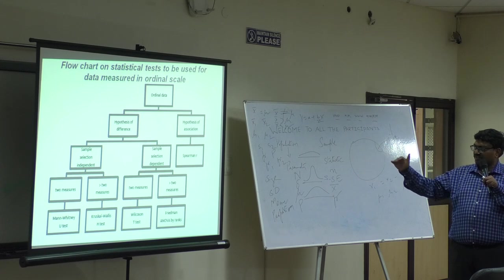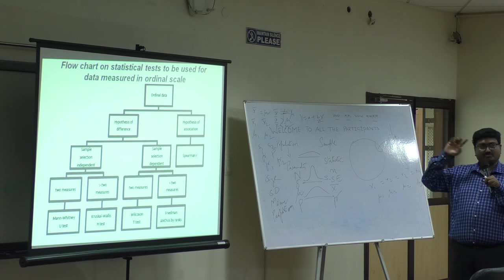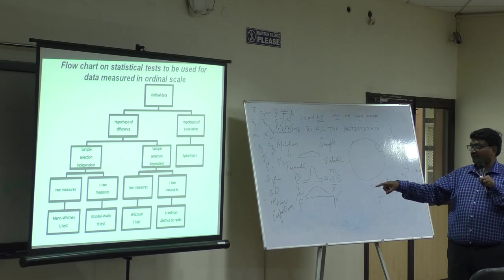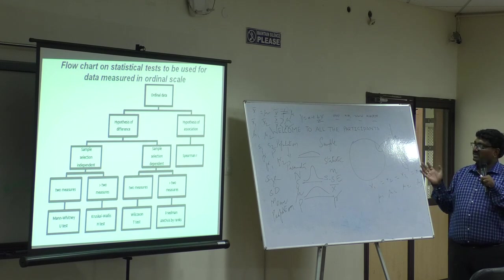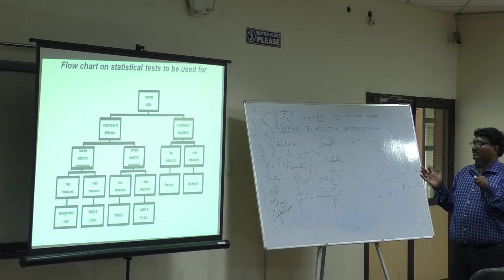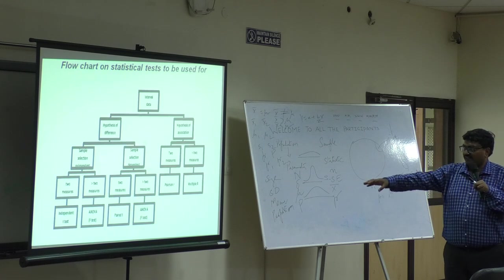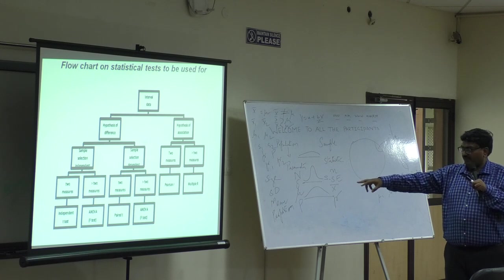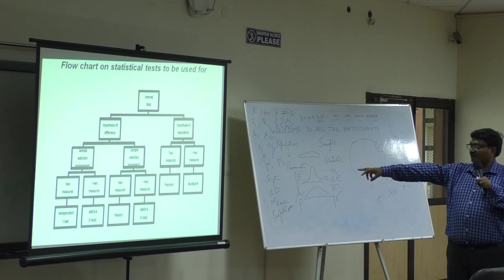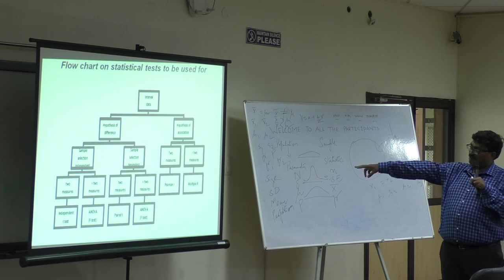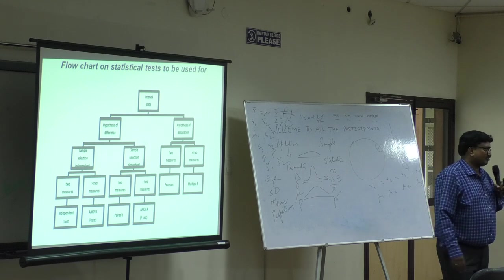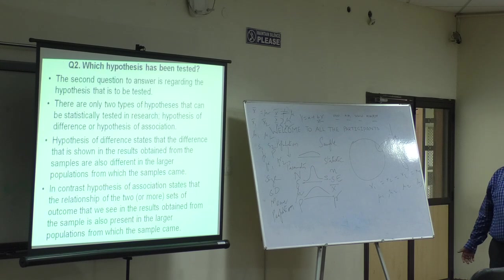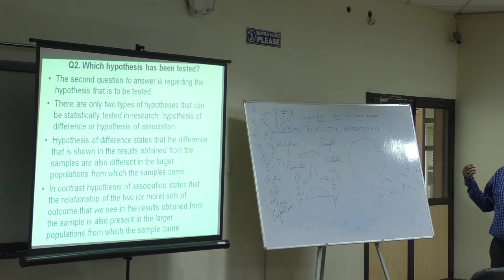Sample selection dependent, two measures: Wilcoxon T. I corrected myself—it's T-test, Wilcoxon. And more than two measures: Friedman and ANOVA. Next set is interval. In the end, there is an independent T-test, there is ANOVA which is F. There is paired T-test and ANOVA. Here you have Pearson R and multiple regression R test. Not just simple Y equals A plus BX. I am done.